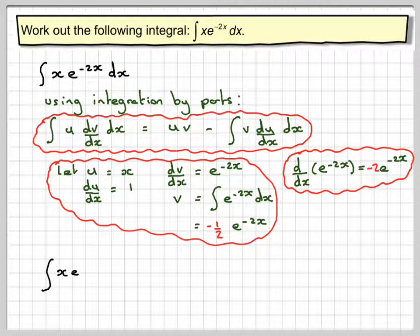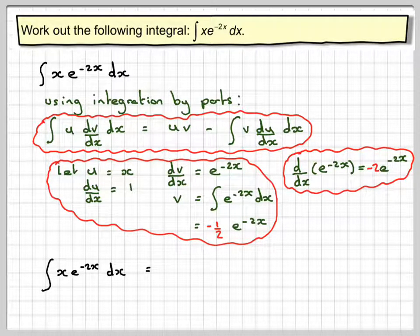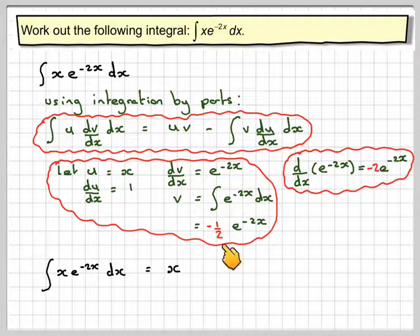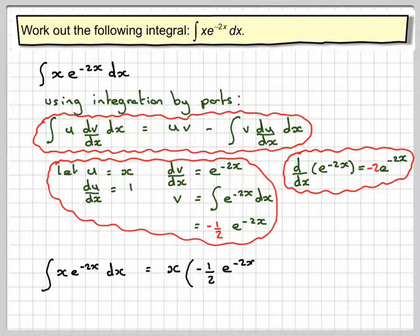So writing things out now using this formula, we've got the integral of x e to the minus 2x dx is u, which is x, times v, which is minus a half e to the minus 2x...